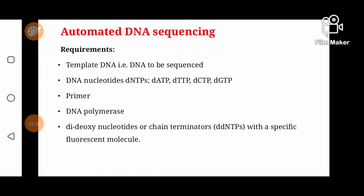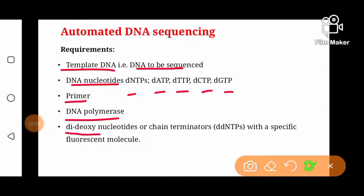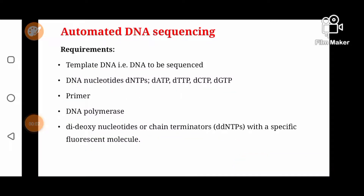The requirements for automated sequencing are the same as used in the basic Sanger method: template DNA — the DNA molecule we want to sequence — normal DNA nucleotides for adenine, thymine, cytosine, and guanine, a primer, DNA polymerase enzyme, and dideoxynucleotides or chain terminators (ddNTPs) each tagged with a specific fluorescent molecule.